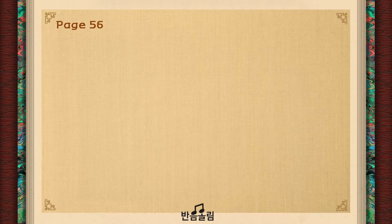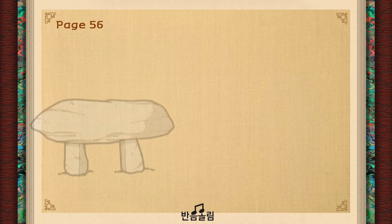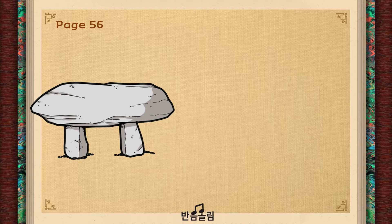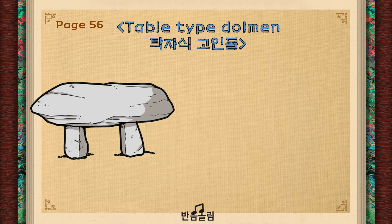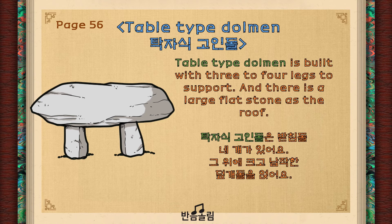Like you see here, there are three types of dolmens. First is Table-type Dolmen. Follow me: Table-type Dolmen. Table Dolmen is built with three to four stone legs to support and a large flat stone as the roof. It looks like a table.